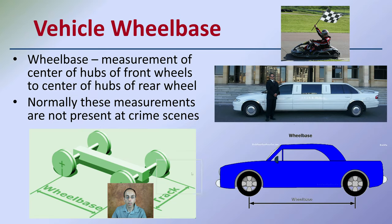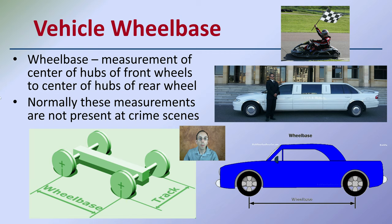The wheelbase is the measurement from the center of hubs of the front wheels to the center of hubs of the rear wheels. Normally these measurements are not present at a crime scene, but they can help indicate if we have a suspect's vehicle. If it's just a regular car, they may not vary that much. But in the extreme case, a limo will have a much longer wheelbase, while something really short like a go-kart will have a very short wheelbase — center of front tire to center of rear tire.